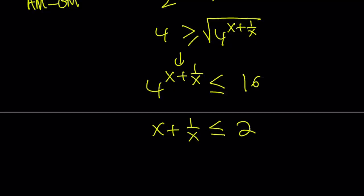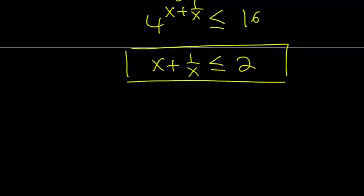Because if x plus 1 over x is greater than 2, then 4 to the power of that number is going to be greater than 16. So we got this interesting inequality. And if you replace x with certain values, for example, let's say we test x equals 2. This gives us 2 plus 1 half. And that's definitely greater than 2.